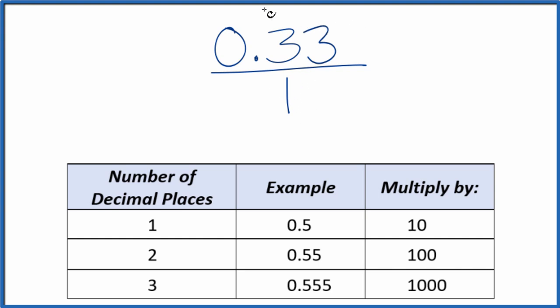Next, we need to get this to be a whole number. And we have two decimal places. With two decimal places, we're going to multiply the numerator there by 100. So 100 times 0.33, that equals 33. So we have our whole number.